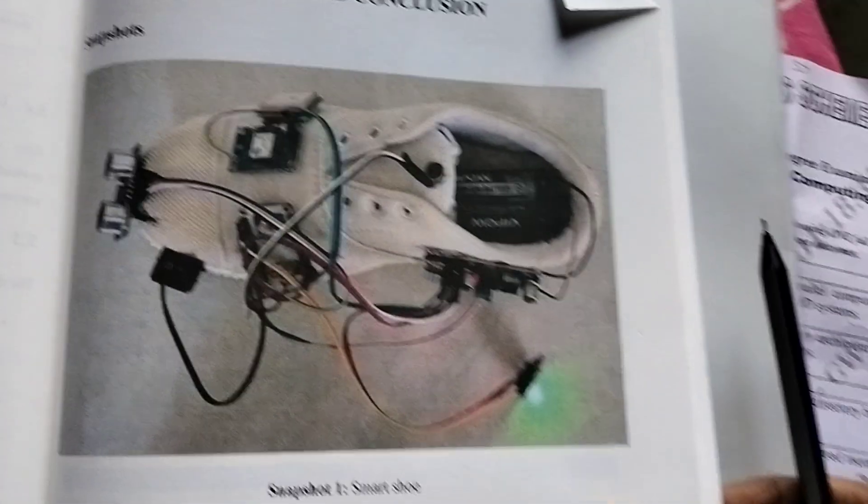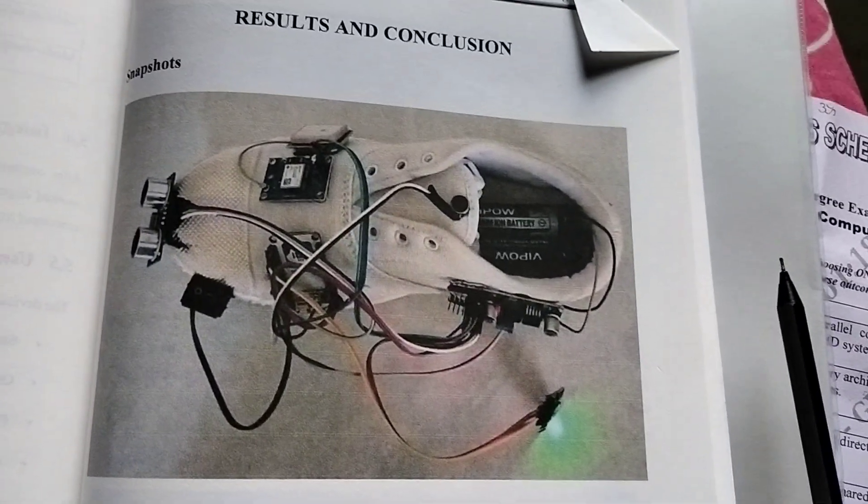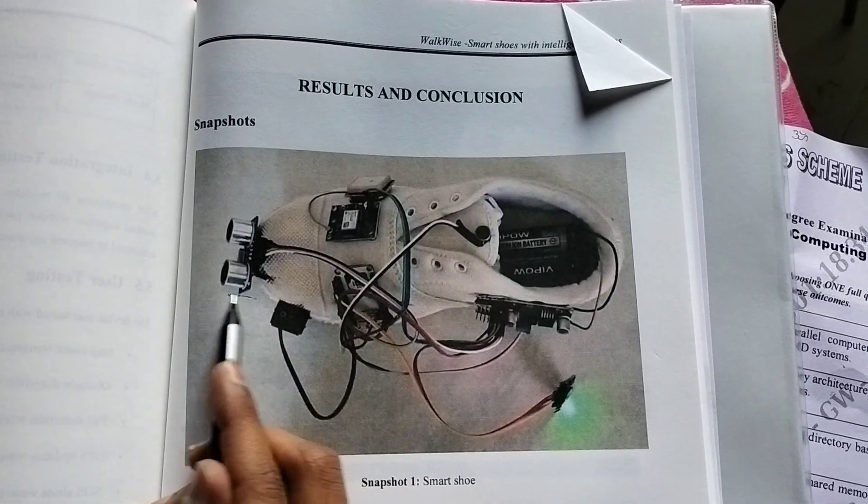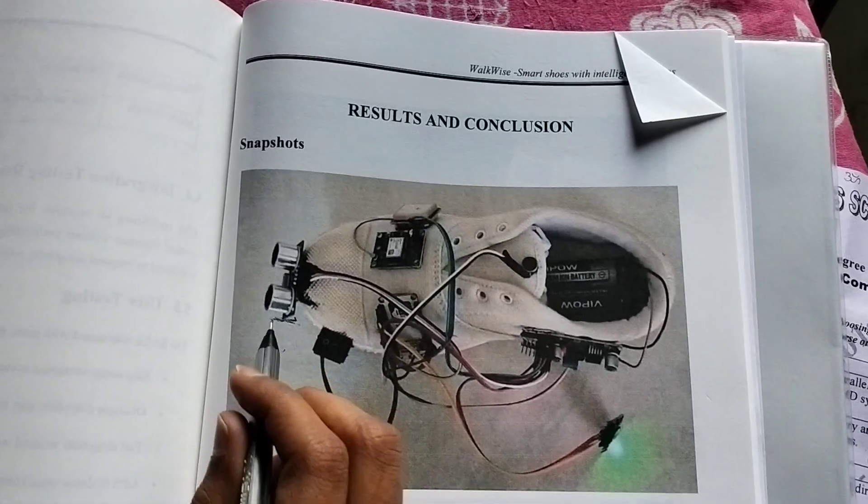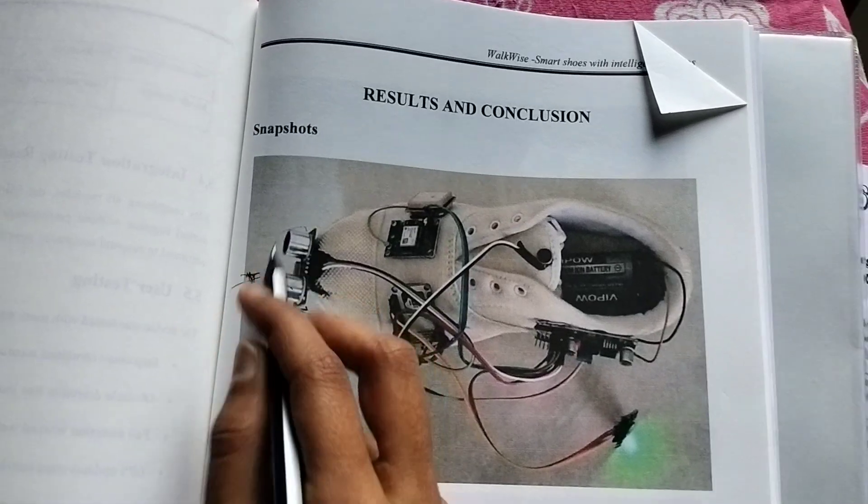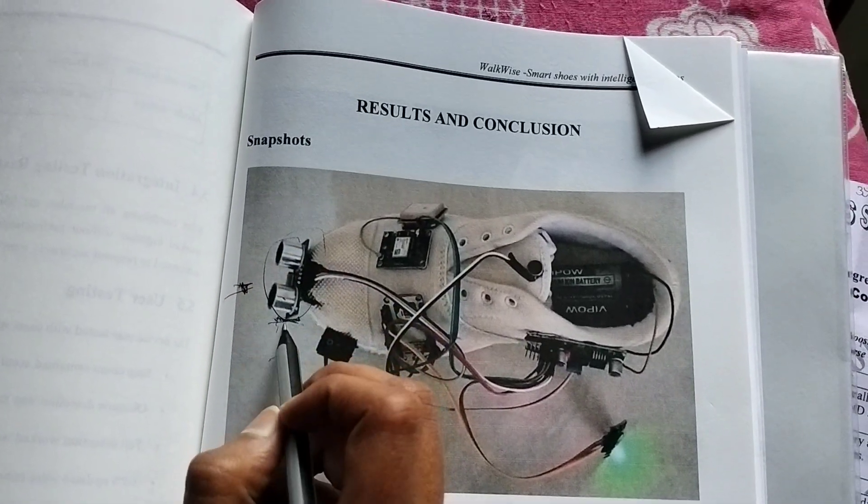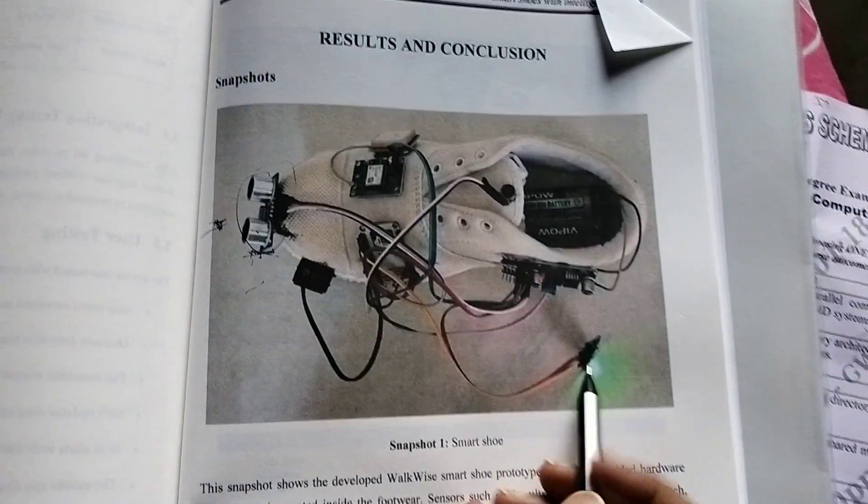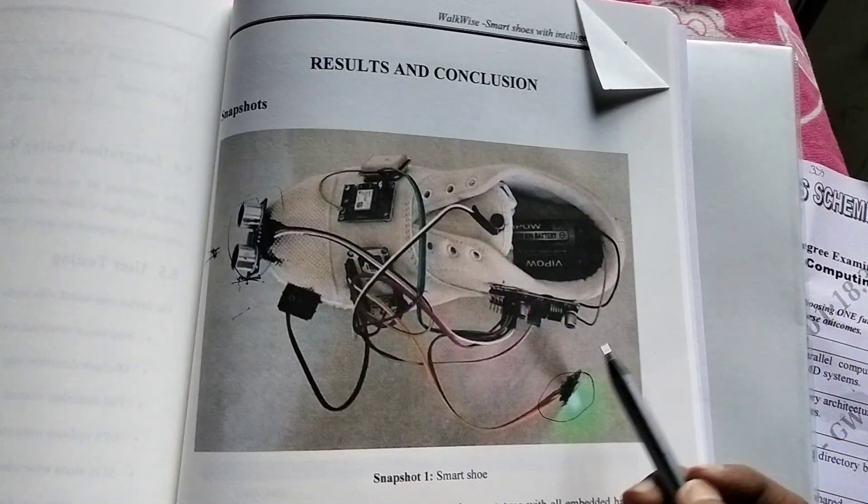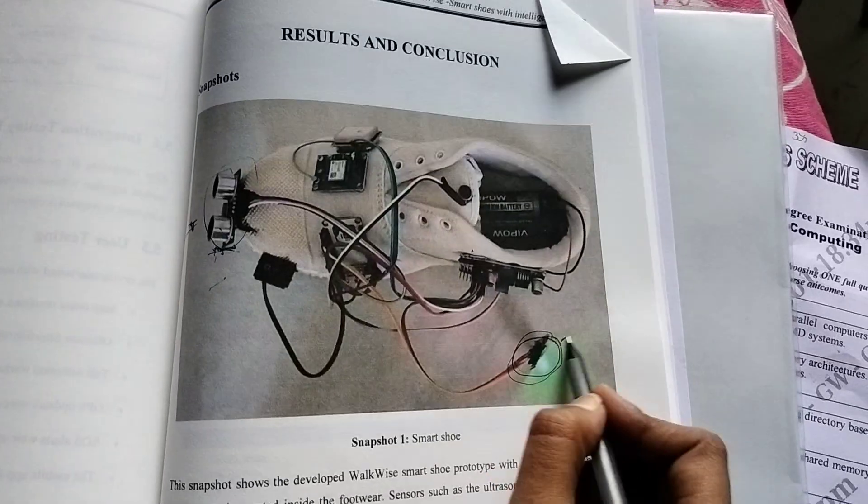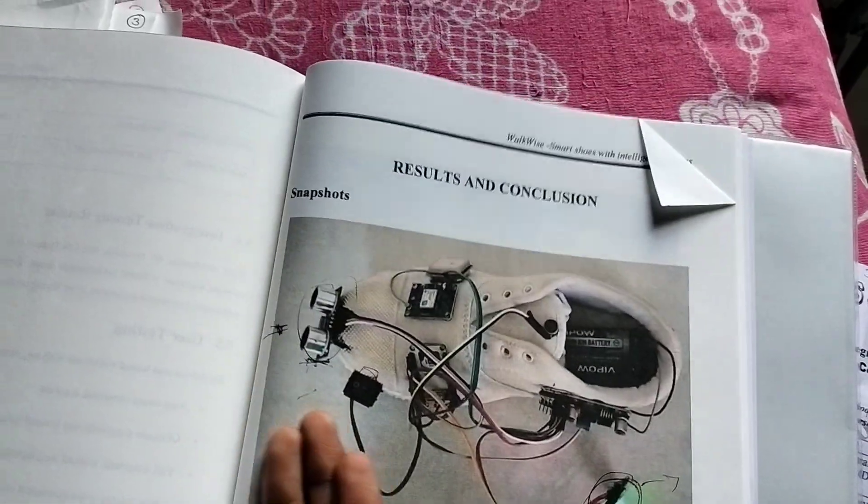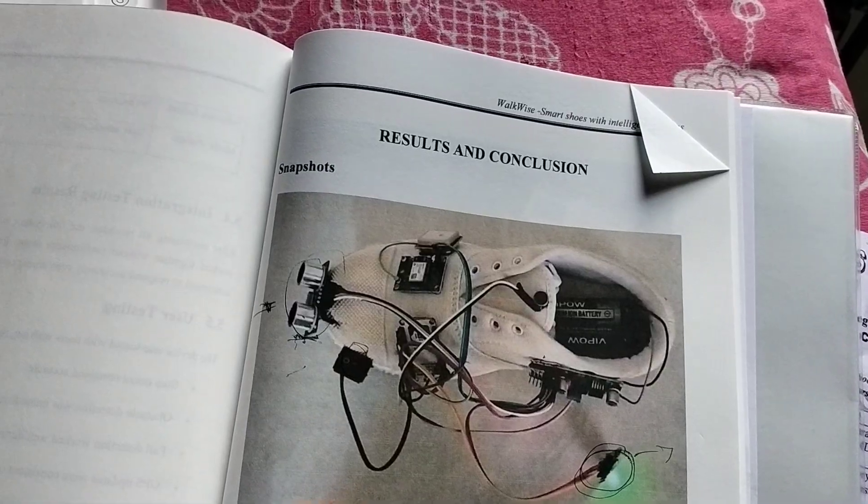Look at this beauty, bro. You know what this one is for? Obstacle detection. Like, if there is something in front, it will detect - don't go that way. This is for blind people. And this one is for fall detection. If I'm about to fall, then this will send an alert.